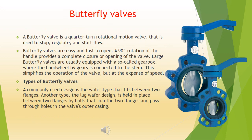Butterfly valves. A butterfly valve is a quarter-turn rotational motion valve that is used to stop, regulate, and start flow. Butterfly valves are easy and fast to open — a 90 degree rotation of the handle provides a complete closure or opening of the valve. Large butterfly valves are usually equipped with a gearbox where the hand wheel is connected to the stem by gears, which simplifies the operation of the valve but at the expense of speed.